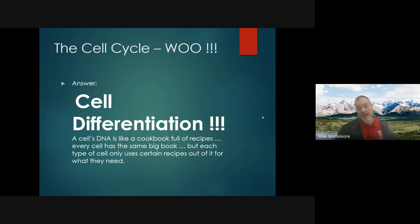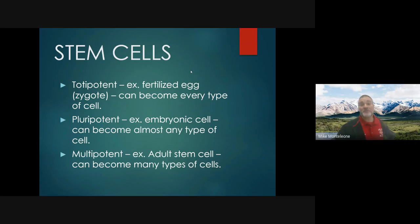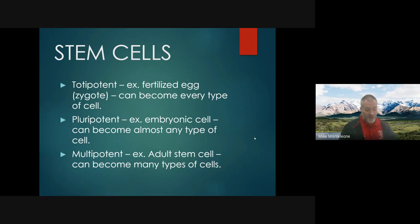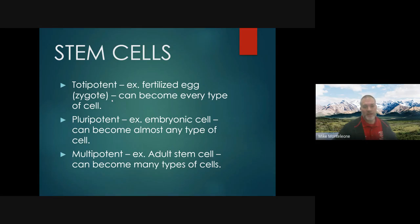That's a key concept — you can guarantee I'm going to ask you to explain that in an open-ended question. Lastly, we have stem cells — cells that can give rise to and differentiate into many different types of cells. The zygote is the ultimate stem cell because it literally gave rise to every cell type in your body, even the placenta. That's called a totipotent stem cell — the fertilized egg, the zygote.